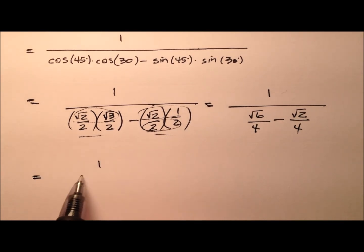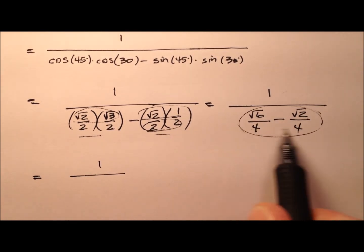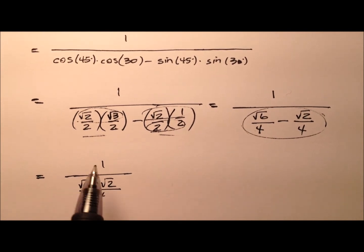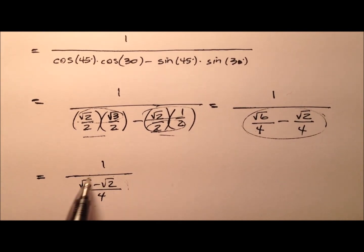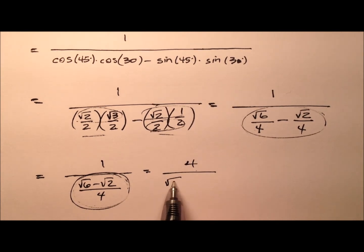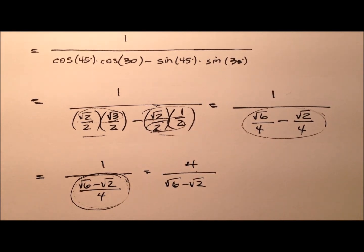So 1 over, we can put these as a single denominator now. So this is what we have right now. But remember, this 1 over idea is the reciprocal function in play. So what we need to do is just turn this fraction over. So it's going to be 4 over the square root of 6 minus the square root of 2.